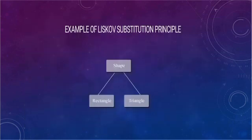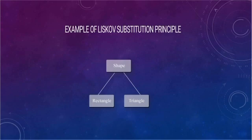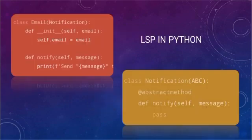If we have a shape class with rectangle and triangle as subclasses, both rectangle and triangle classes are extended from the shape class. The square class becomes the child of the triangle class, and the square class inherits the behavior of the triangle. This will not break the existing code, and this is how you figure out whether the code is violating the principle or not.